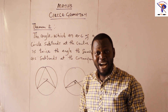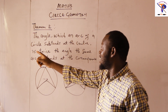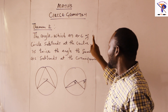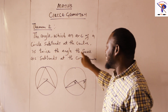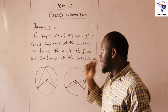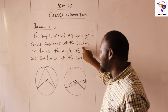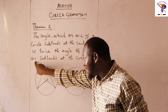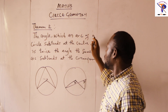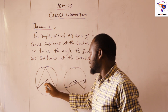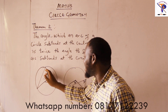When I was in secondary school, we used to say 'angle at the center is twice angle at the circumference.' So this is the original statement: the angle which an arc of a circle subtends at the center is twice the angle the same arc subtends at the circumference.